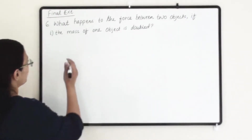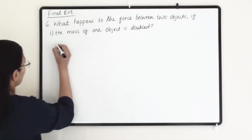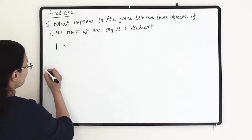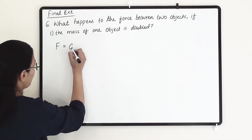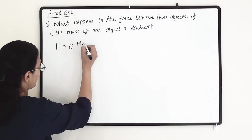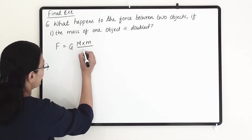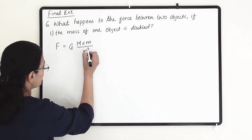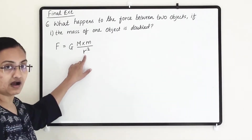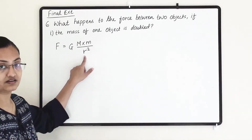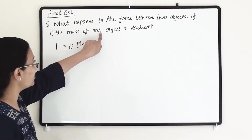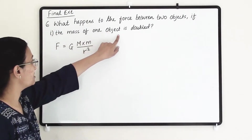Let us calculate. Our original equation and formula is F equals G times capital M times small m, divided by r square or d square. Here we are taking r as the radius of the Earth. Now the mass of one of the objects is to be doubled.